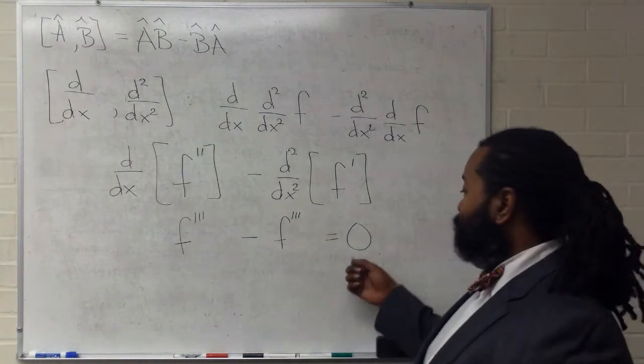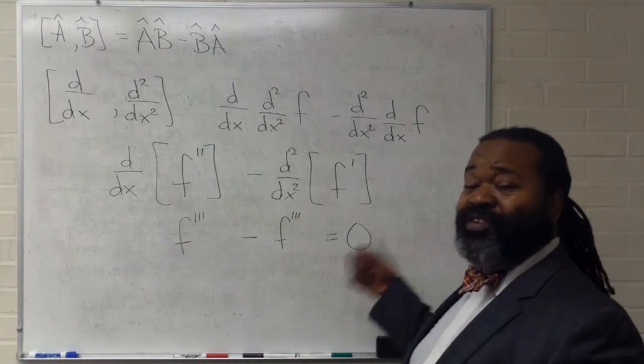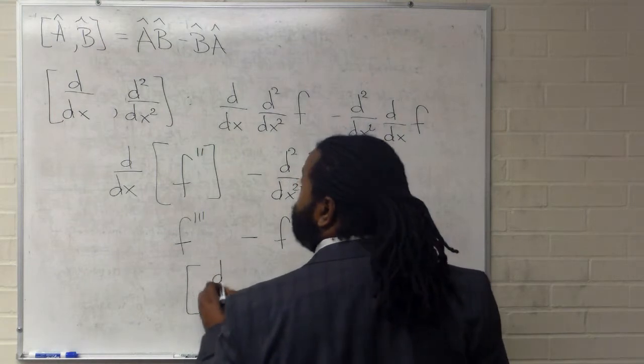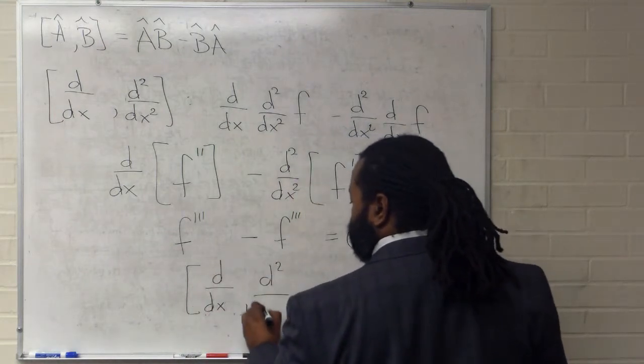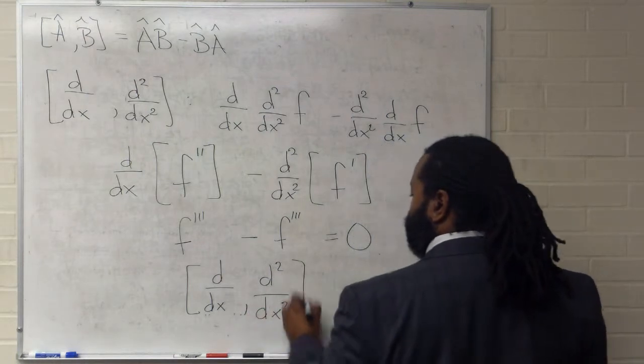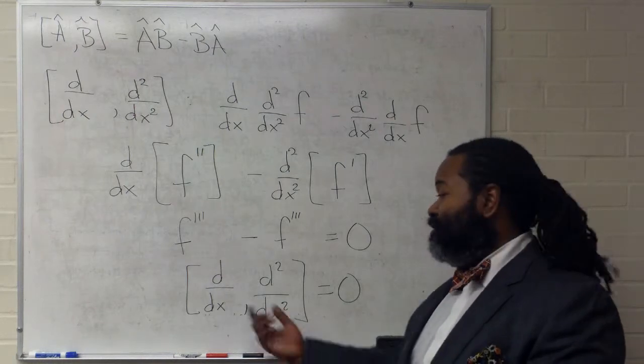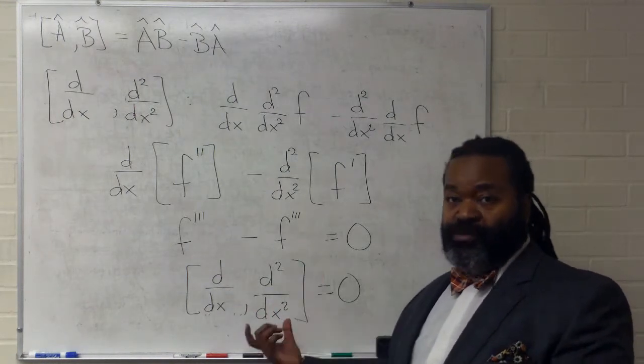As a result, this is what would multiply the function itself, and that's what we'll use for our commutator value. As a result, getting a value of zero for the commutation relation between two operators means that these two commute.